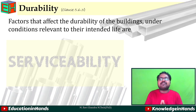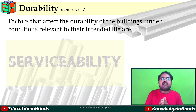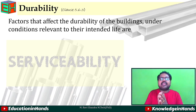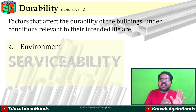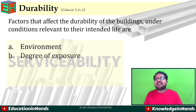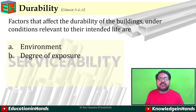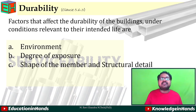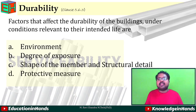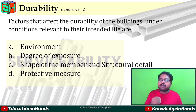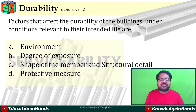For durability, clause 5.6.3 identifies factors affecting the durability of buildings: (1) environment, (2) degree of exposure, (3) shape of the member and its structural detail, (4) protective measures taken for the steel structure, and (5) ease of maintenance. Not following these five conditions properly may affect the durability of the structure.